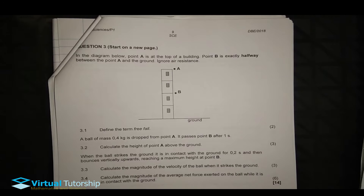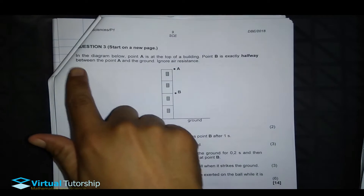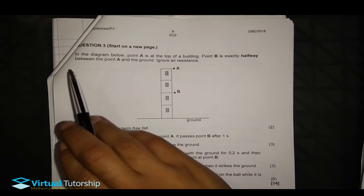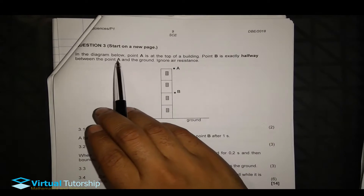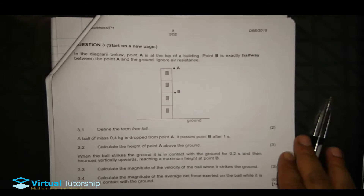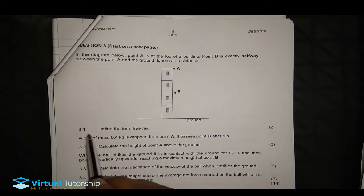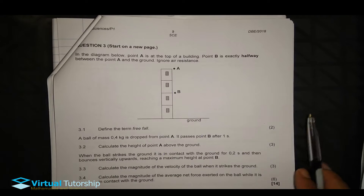We have a vertical projectile motion — a free fall problem. In the diagram below, point A is at the top of a building, point B is exactly halfway between point A and the ground. Ignore air resistance. 3.1: Define the term free fall.